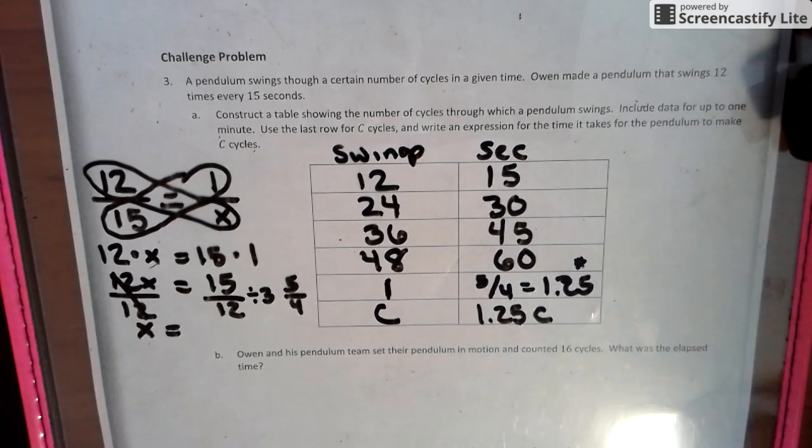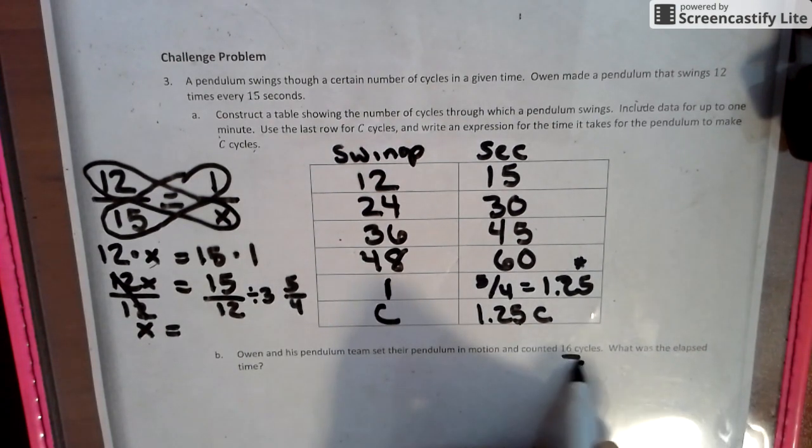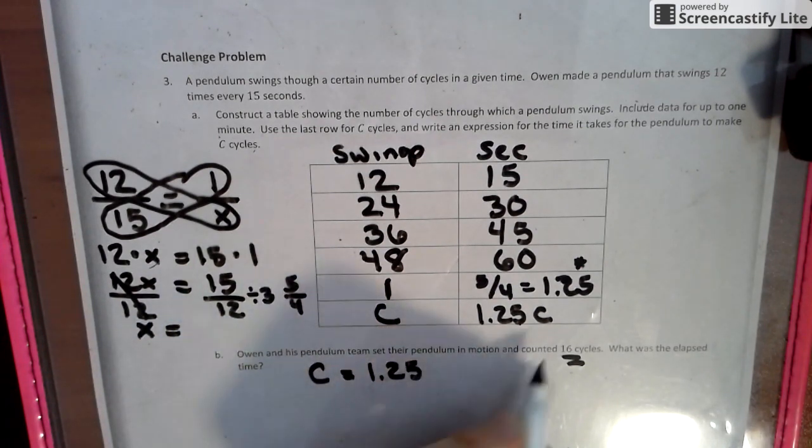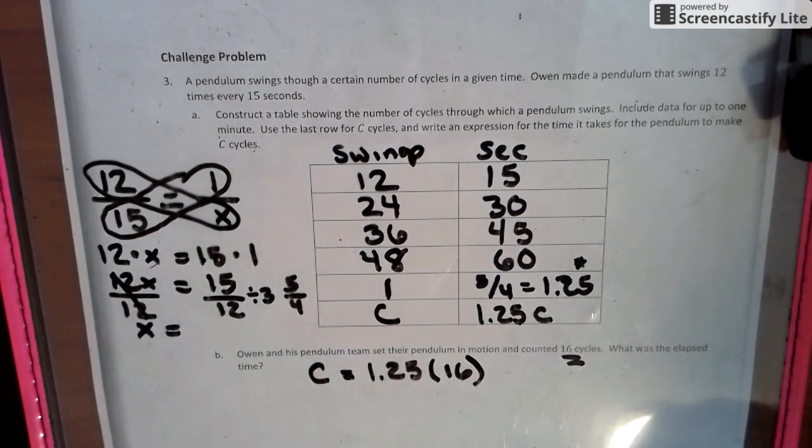So it says we want to find out 16. So we can just put in 16 here. So we have C equals 1.25 times 16 of them. So this time 16. And when we do that, on your paper,